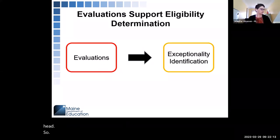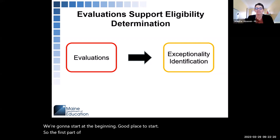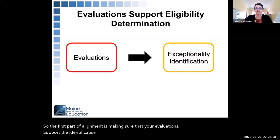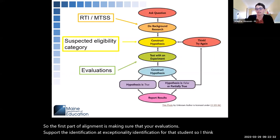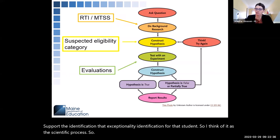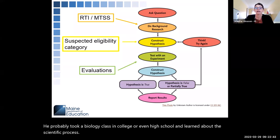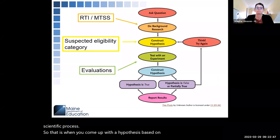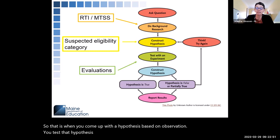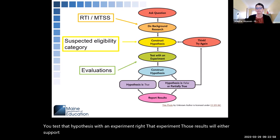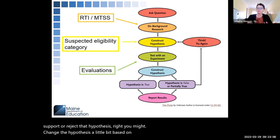We're going to start at the beginning. The first part of alignment is making sure that your evaluations support the exceptionality identification for that student. Think of it as the scientific process. You come up with a hypothesis based on observation, you test that hypothesis with an experiment, and those results will either support or reject the hypothesis. You might change the hypothesis a little bit based on those results and try again with a different experiment.